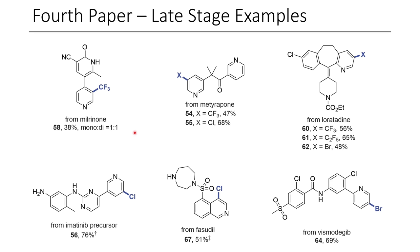They also show some late-stage examples. Milrinone is able to be trifluoromethylated, although they do see a little bis-trifluoromethylation. They also functionalize loratadine — the carbamate group isn't even touched. And with an imatinib precursor, where you might expect electrophilic functionalization on the left-hand ring, they're still able to selectively functionalize the pyridine. Really impressive. I look forward to seeing this chemistry mentioned in the next edition of Phil Baran's book.